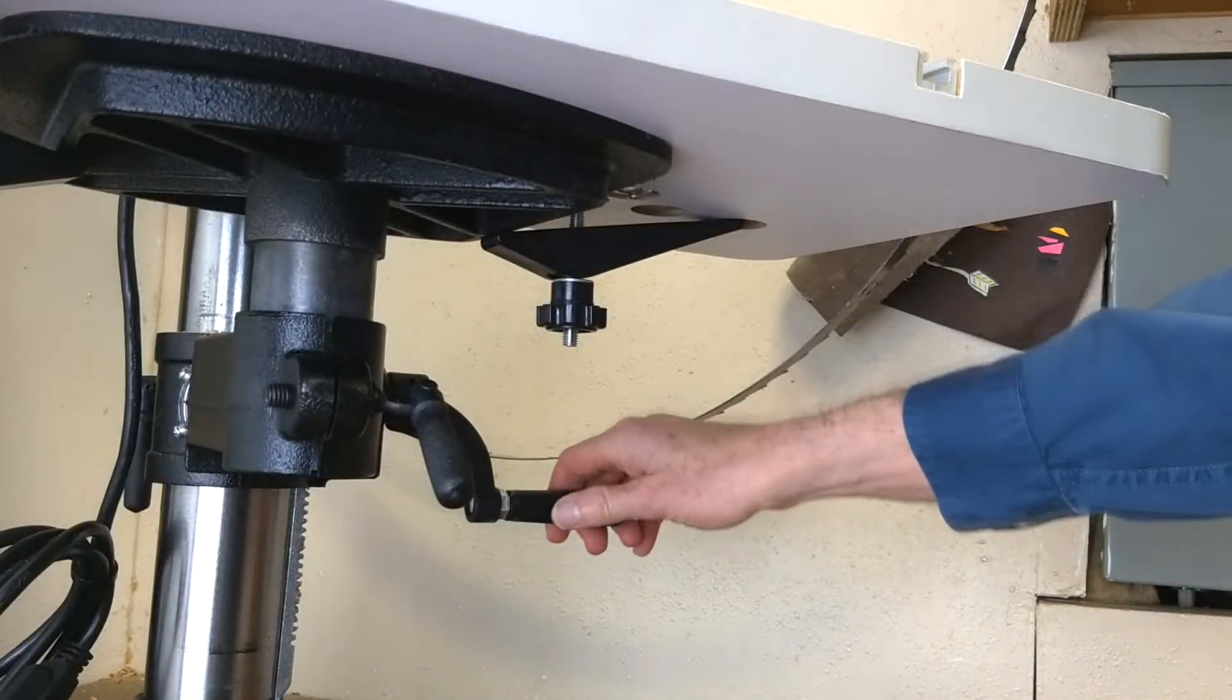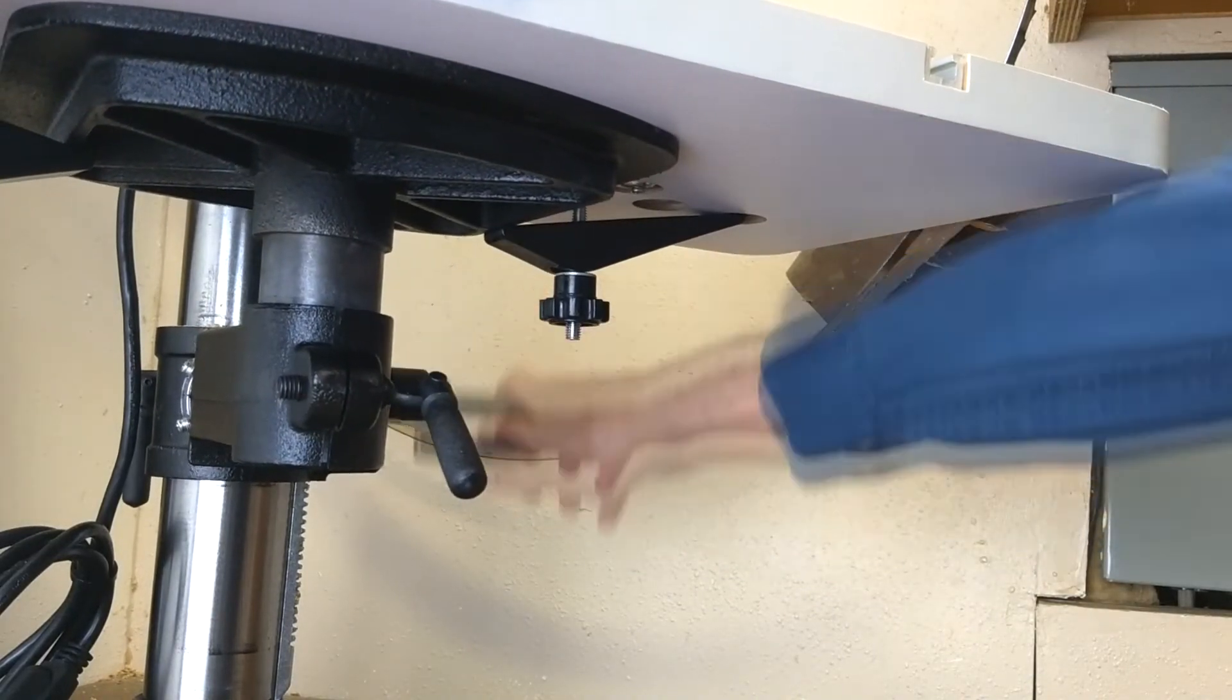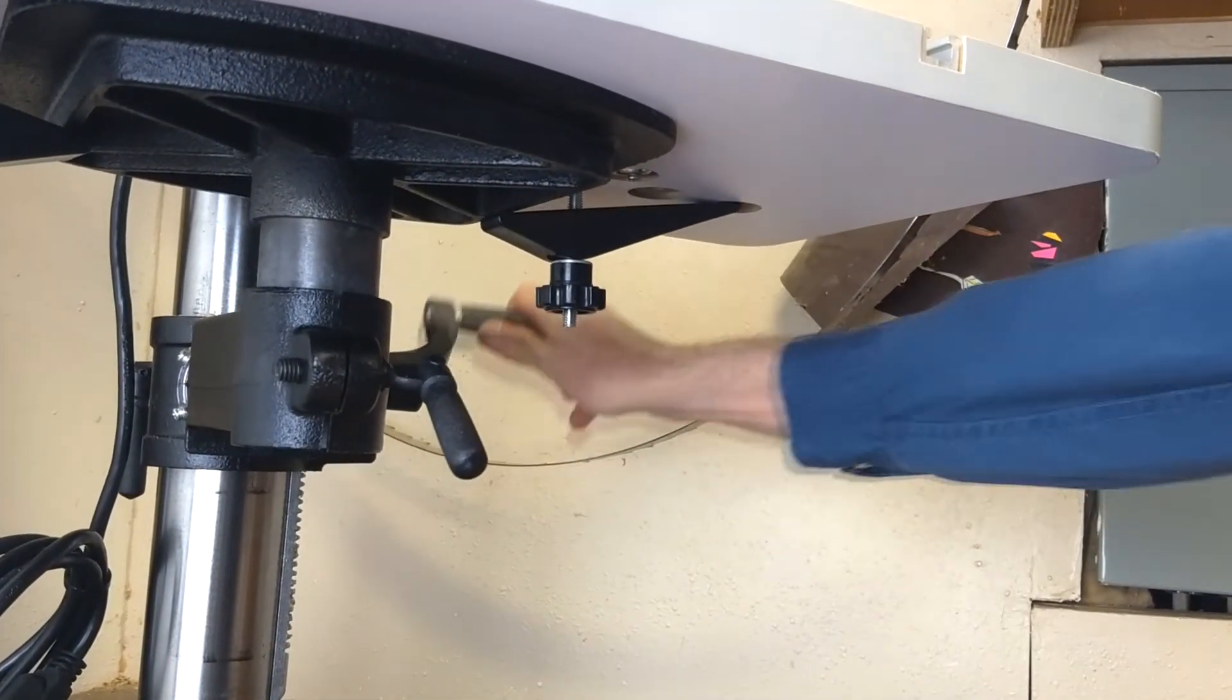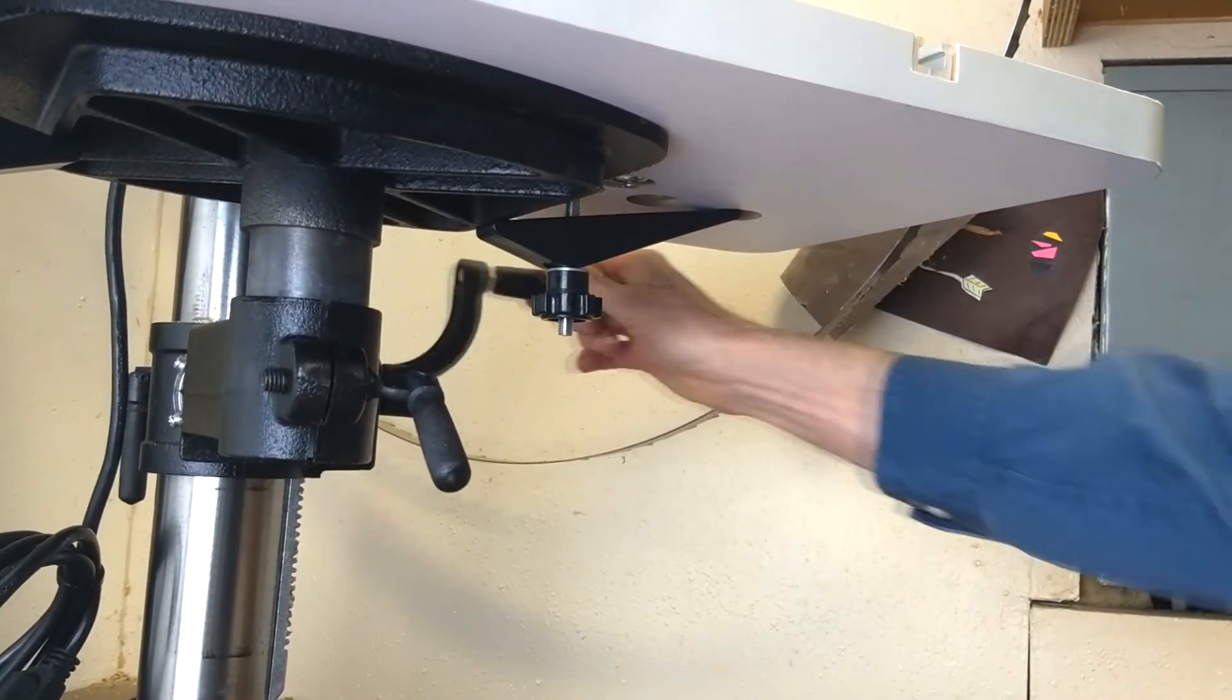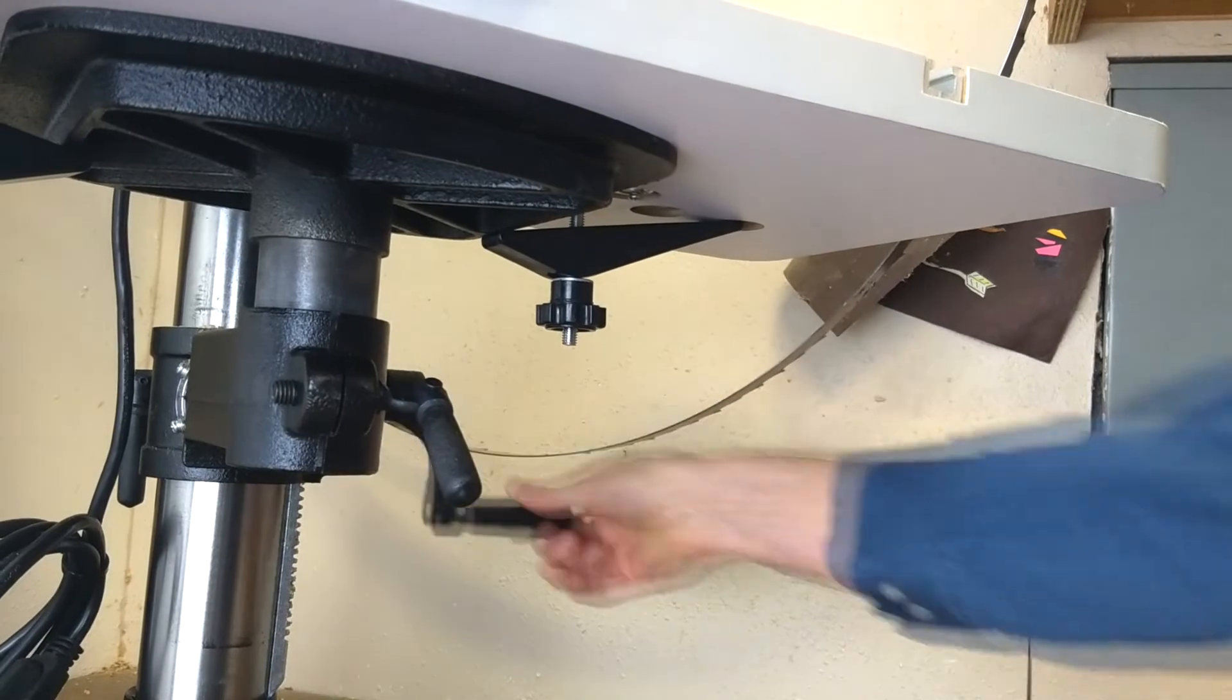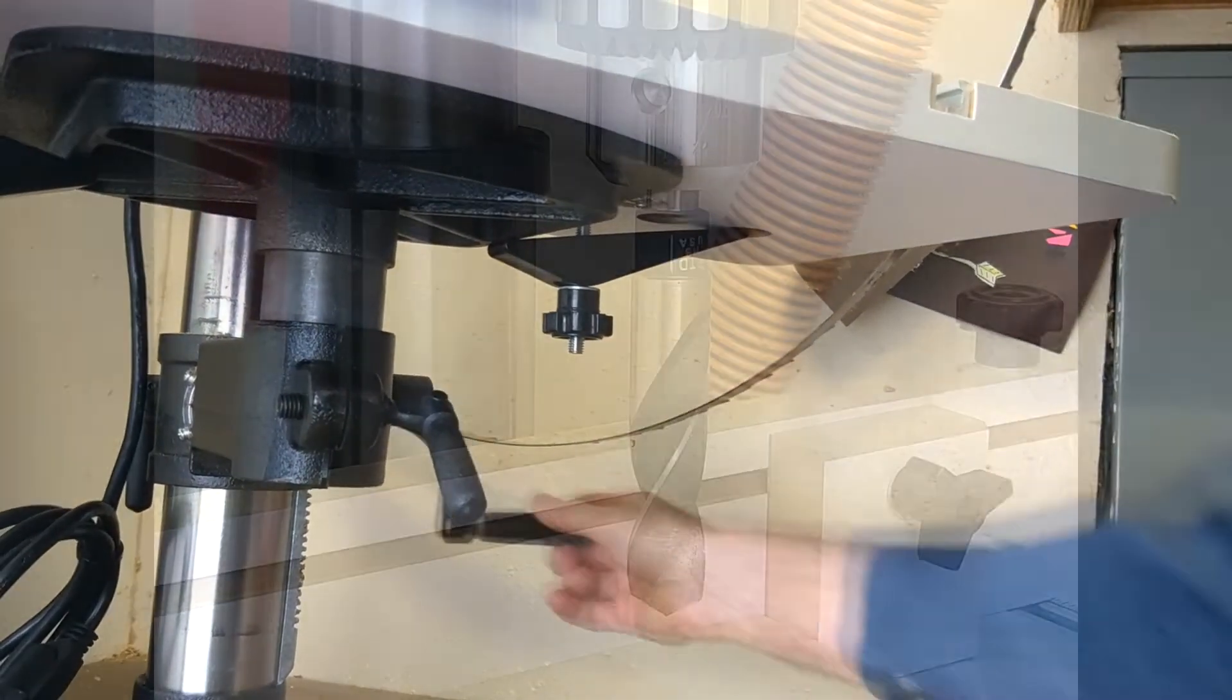One really nice unexpected benefit with the Rikon press is that with the height adjustable table, I'm able to easily reach the table crank and raise or lower the table without banging my knuckles, even with the large accessory table.